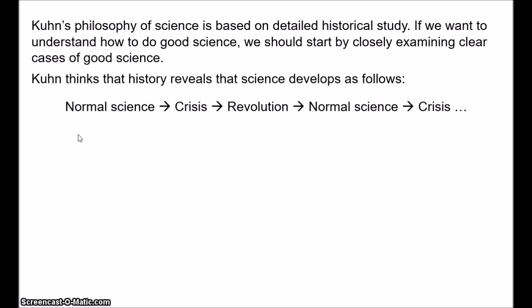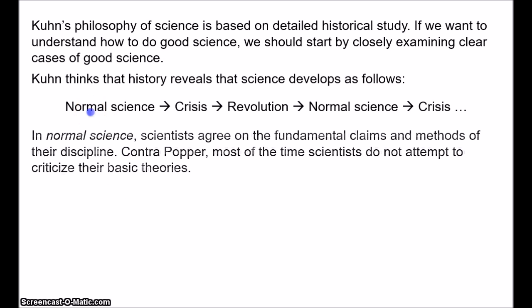So let's explain this from the start: normal science. Normal science, as the name implies, is what most scientists spend most of their time doing. It's day-to-day, quotidian research. If you go into the average scientific laboratory or university department, you'll probably encounter scientists doing normal science. The crucial point about normal science is that scientists all agree on the fundamentals — on the fundamental claims and methods of their discipline.